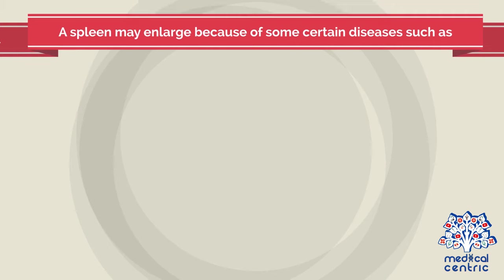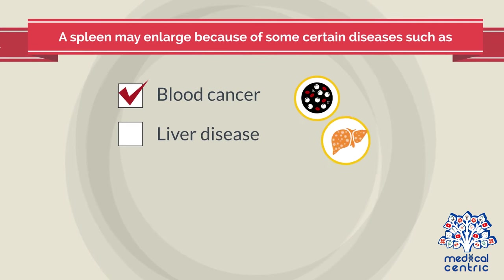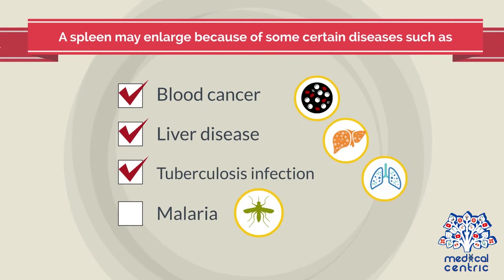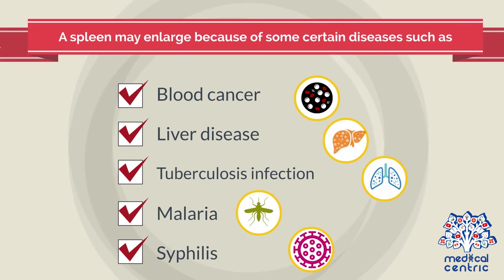A spleen may enlarge because of certain diseases, such as blood cancer, liver disease, tuberculosis infection, malaria, and syphilis.